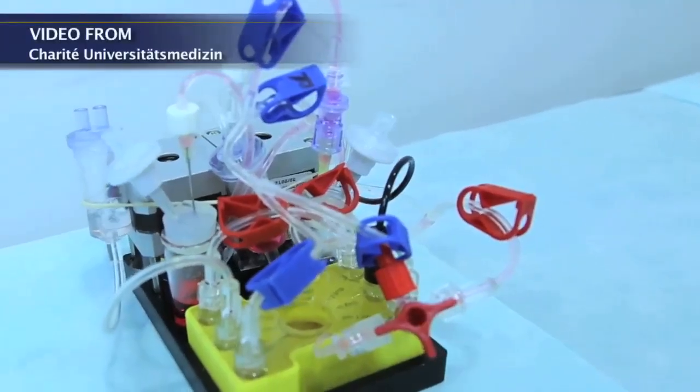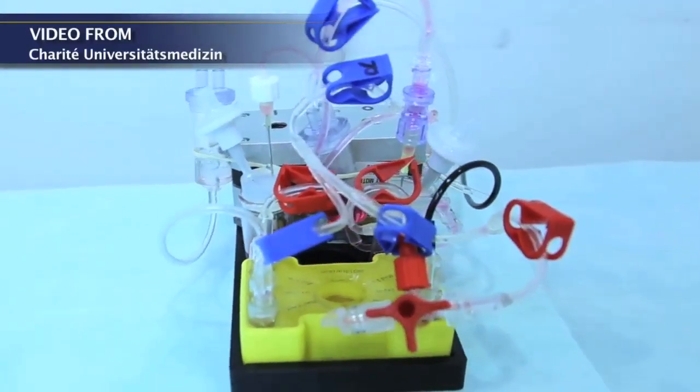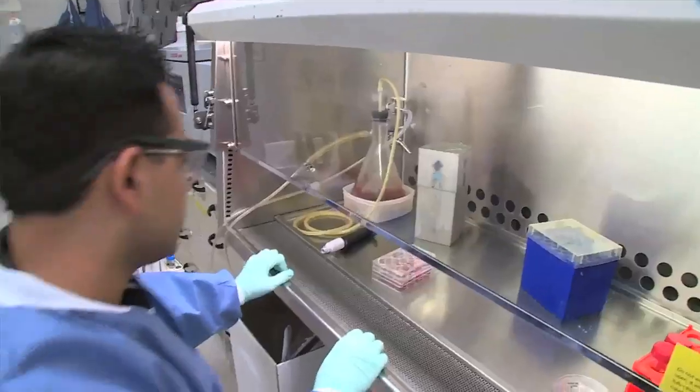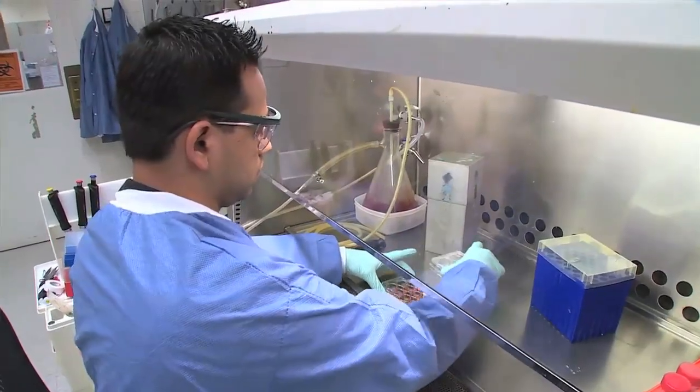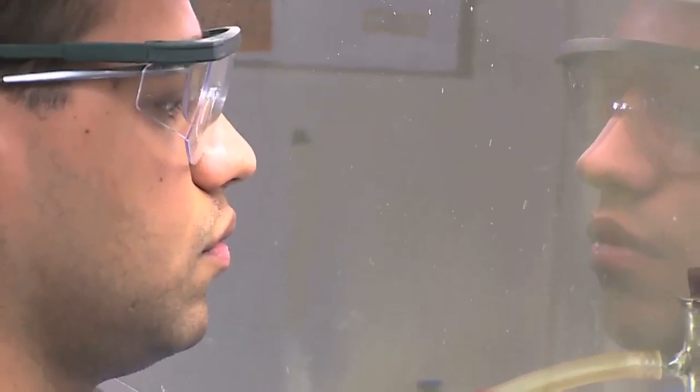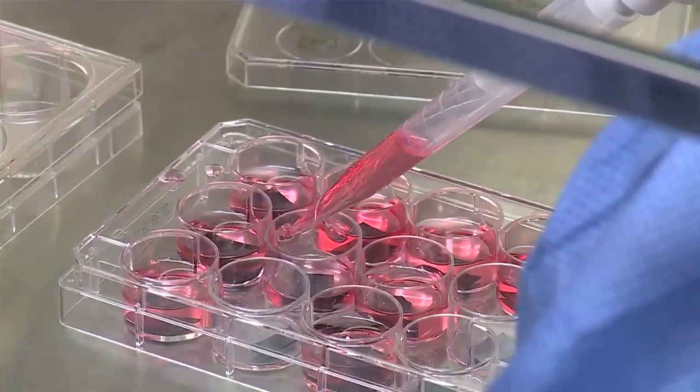We recently put together the liver module, working with colleagues from Vanderbilt in Nashville and Charité from Berlin, and that was so exciting to see the liver function for the first time in front of my own eyes. So your own liver takes amino acids and turns them into glucose, which is sugar. And it's a storage place for sugar in your body. And the surrogate liver did the same thing. It sure did.